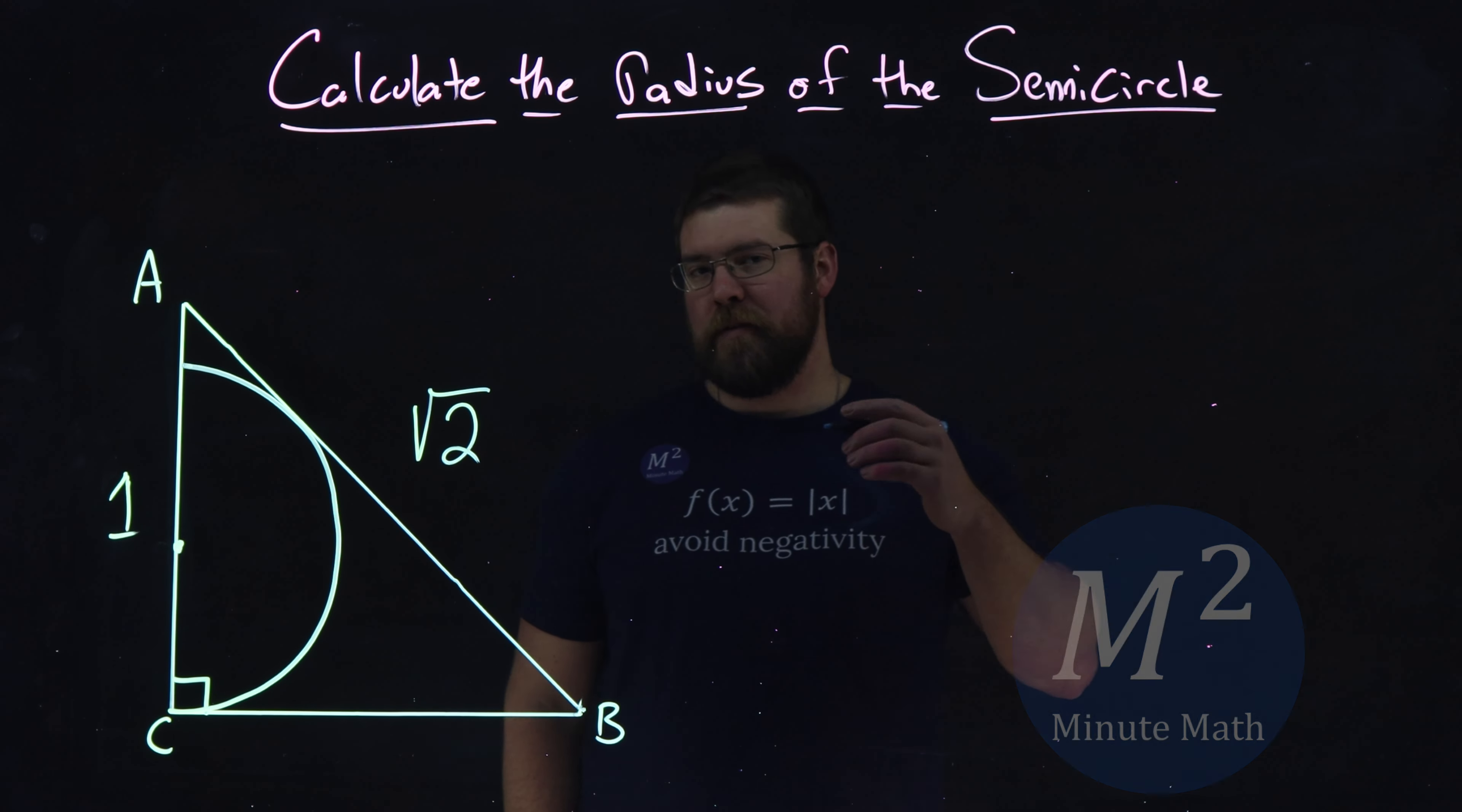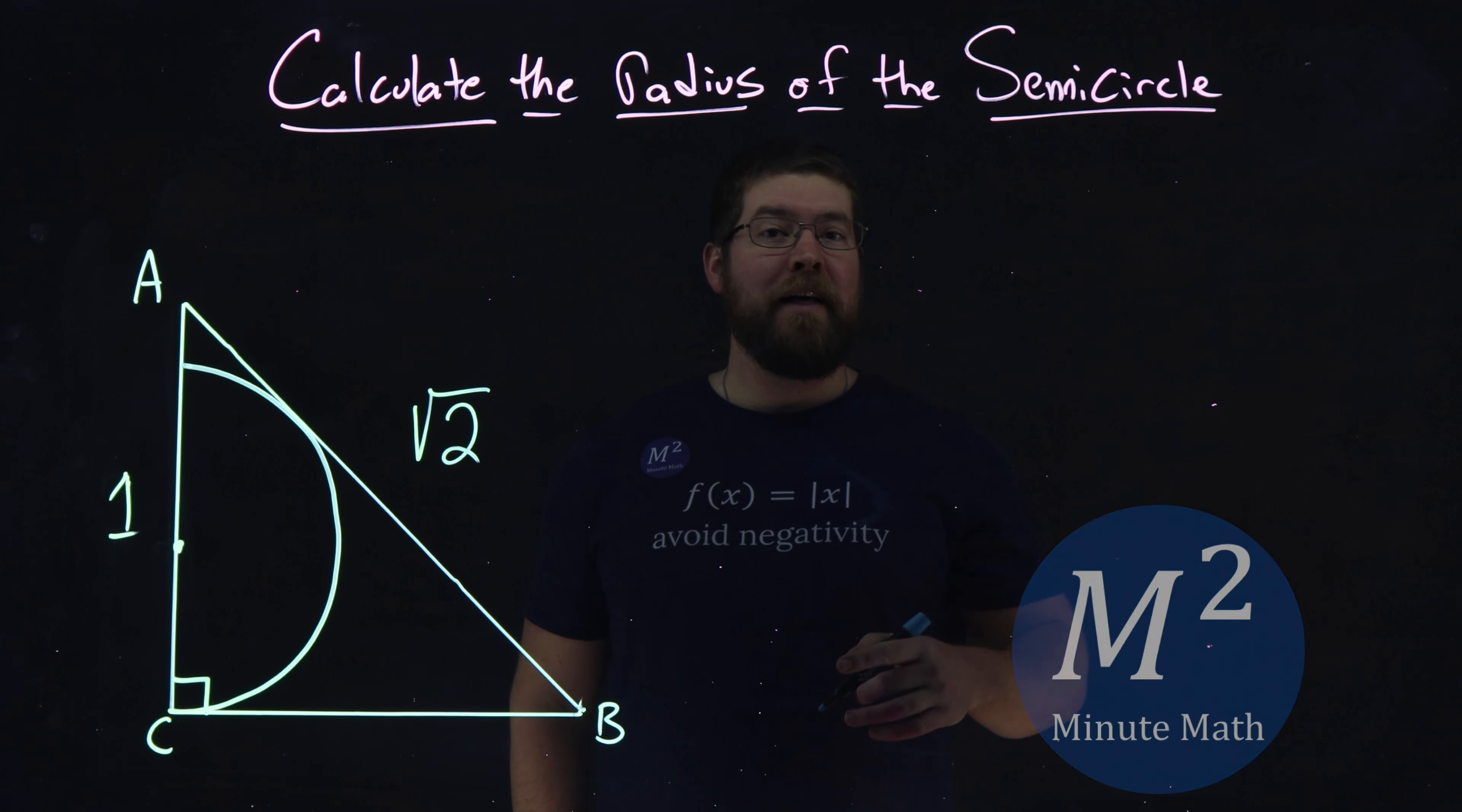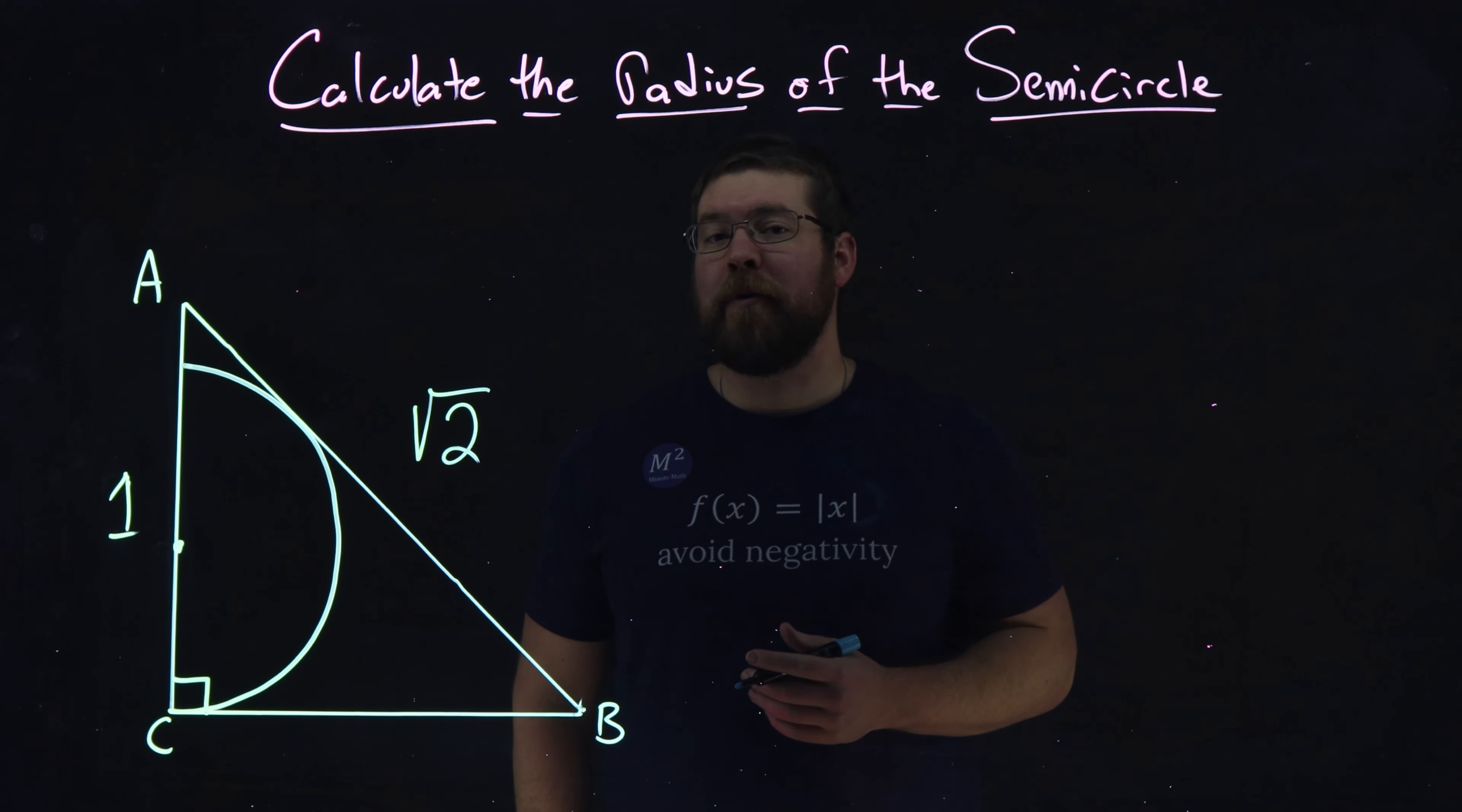Hi, I'm Sean Gannon, and this is Minute Math. We want to calculate the radius of the semicircle that's inscribed in this right triangle.